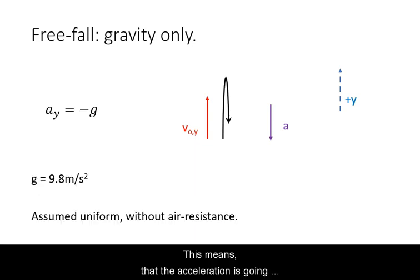This means that the acceleration is going to have a negative sign. Near the surface of the Earth, the gravitational field is assumed to be uniform with a value of 9.8 meters per second squared. In free fall, we also neglect the influence of air resistance.